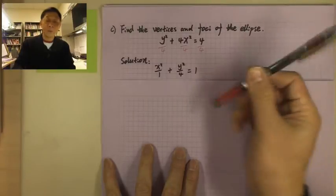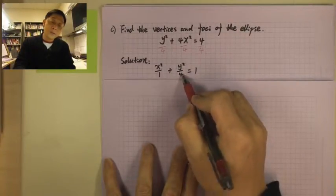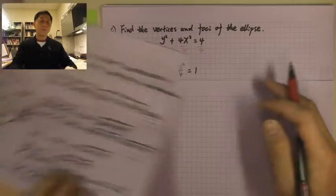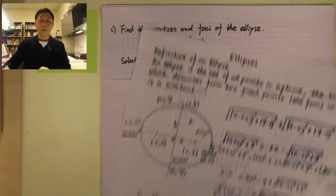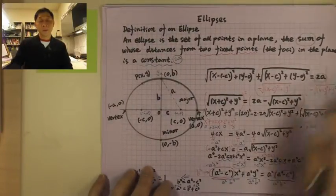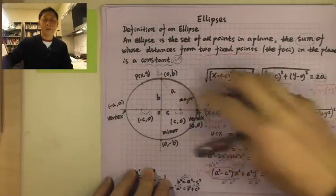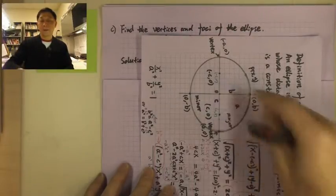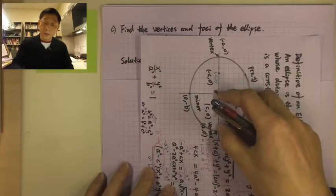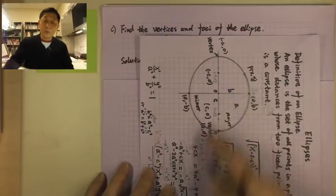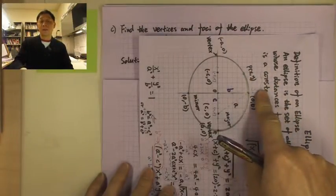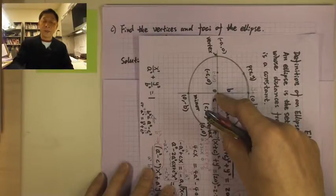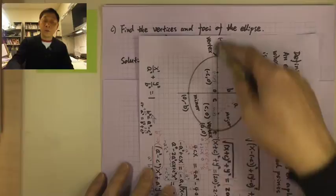In this case, what we have is the constant 4 below y, which is bigger than 1. Which one is bigger — which one is a? Previously we looked at the ellipse where x squared is over a and y squared is over b. The longer axis is over a, the shorter one is over b. But now this will be y and this will be x.